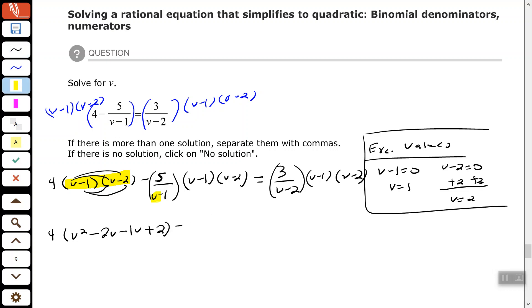The second part, we can simplify or cancel those V minus 1, so it gives me negative 5 times V minus 2. And then on the other side of the equal sign, I can cancel the V minus 2s, so that gives me 3 times V minus 1.